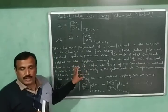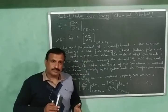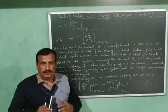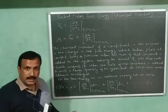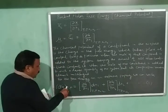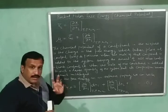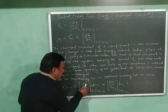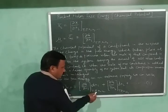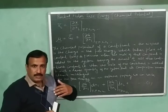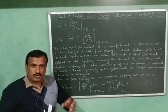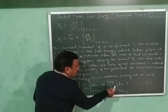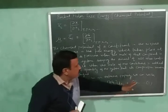This is the definition of chemical potential or partial molar free energy. Since free energy is an extensive property, we can write the equation for free energy as: dG (at constant temperature and pressure) = (∂G/∂N₁) at constant temperature, pressure, and composition, multiplied by dN₁, plus (∂G/∂N₂) multiplied by dN₂. This is equation number 1.